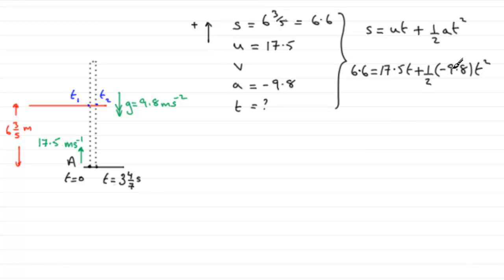If we can cancel the two into the minus 9.8, it's going to give us minus 4.9t squared. If I rearrange this to make this term positive, I'm going to therefore have 4.9t squared, subtract the 17.5t, and then we've got plus 6.6, and that equals zero.